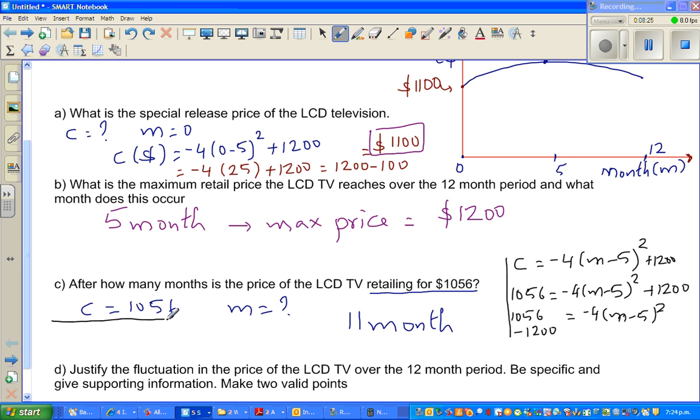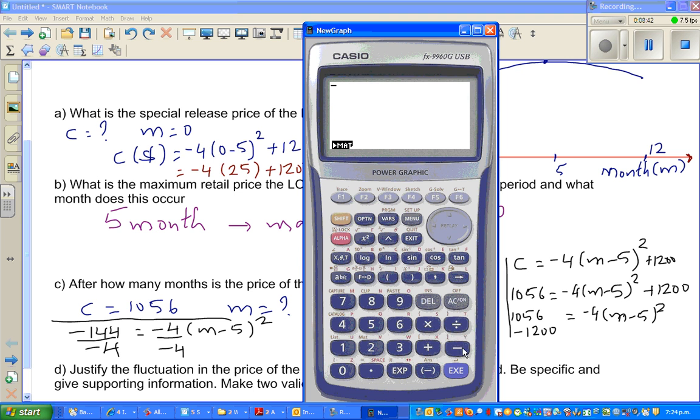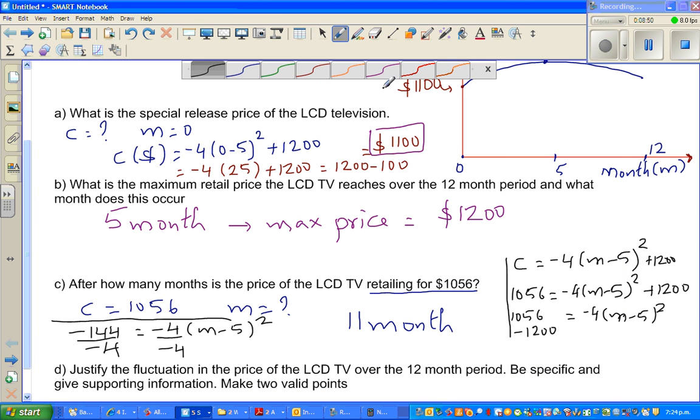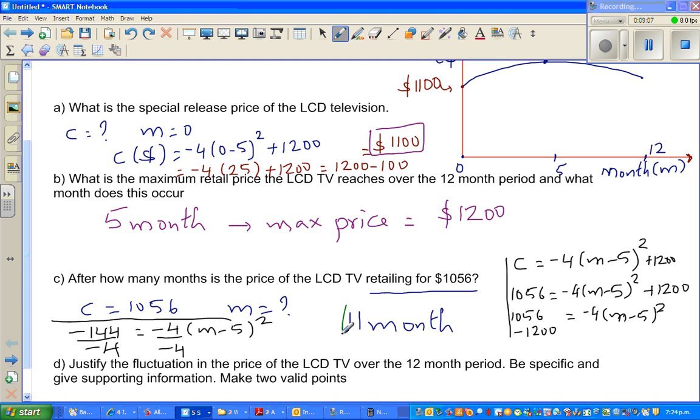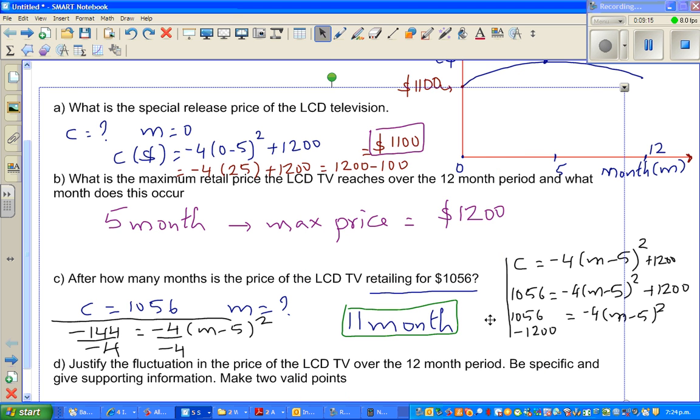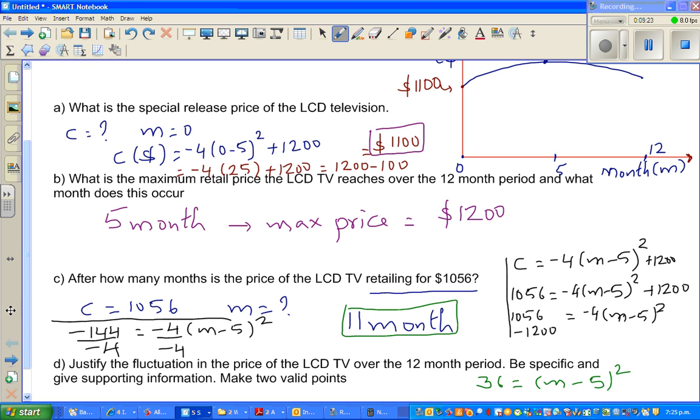So minus 144 equals minus four times M minus five squared. If you divide this side by negative four, I can also divide this side by negative four. Minus 144 divided by negative four gives me 36.